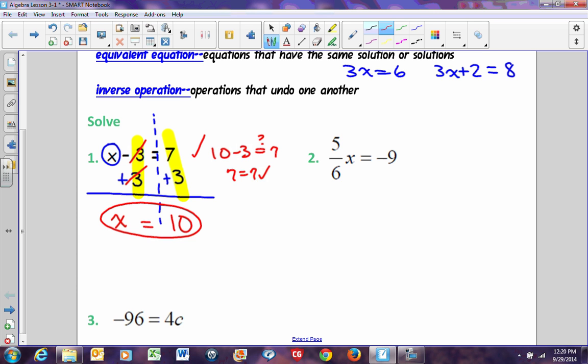Equation number 2, to isolate the variable, you'll notice that we've multiplied it by 5/6. In order to undo multiplication by 5/6, we need to divide by 5/6. Or division is the same as multiplying by a reciprocal. The reciprocal of 5/6 is 6/5. So we're going to take each side of the equation and multiply it by 6/5. Over here on the left-hand side, the 5s cancel out, the 6s cancel out, leaving me with x all by itself. Multiply straight across: negative 9 times 6 is negative 54, 5 times 1 is 5. You can leave it as an improper fraction.